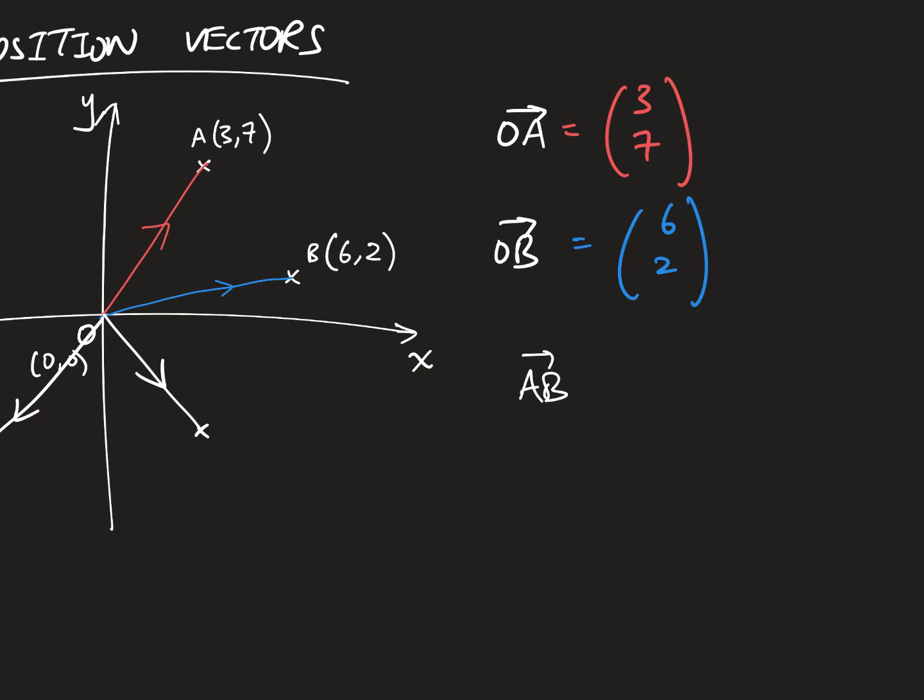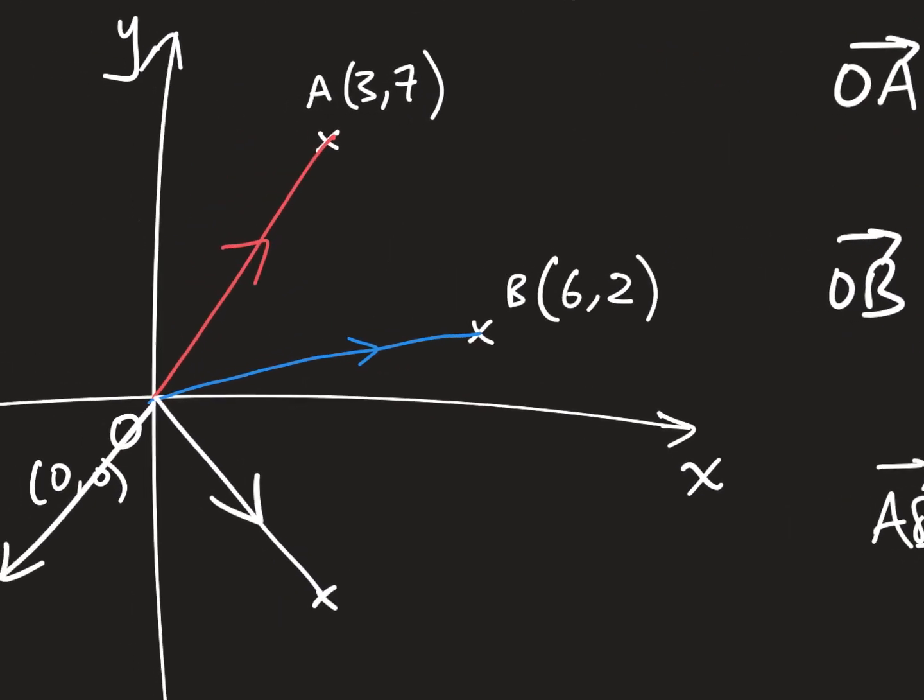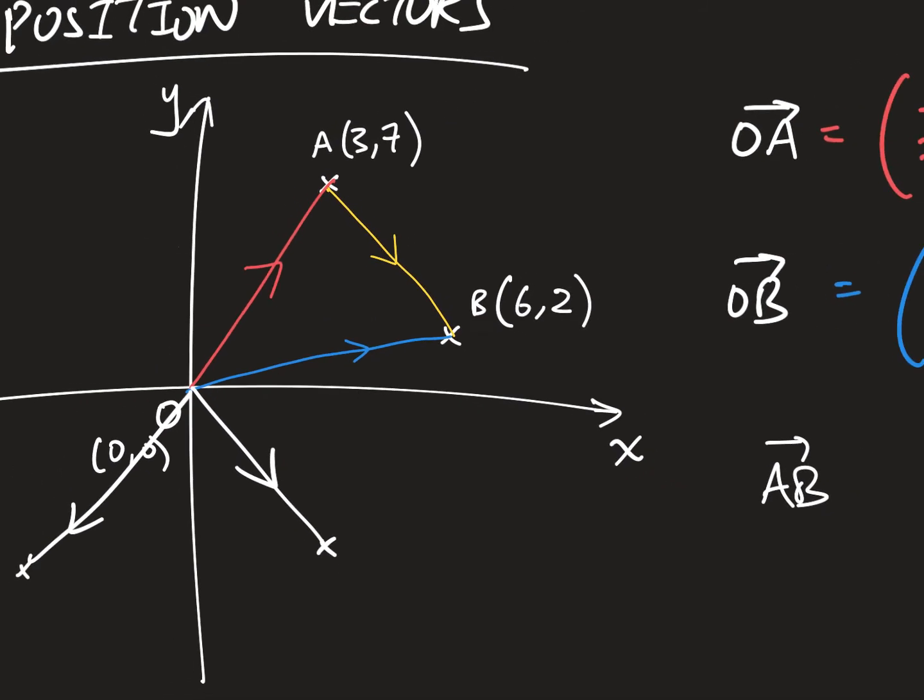I have two points, A and B, and I want to get from A to B. So first, let's think, what is that vector from A to B? It simply looks like this, from A all the way to B. The yellow one is my vector AB.